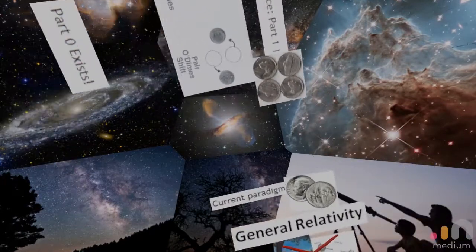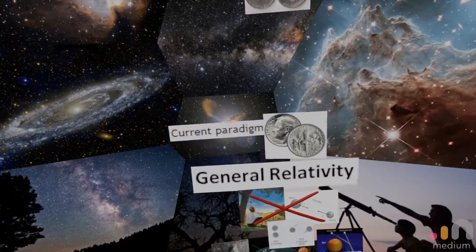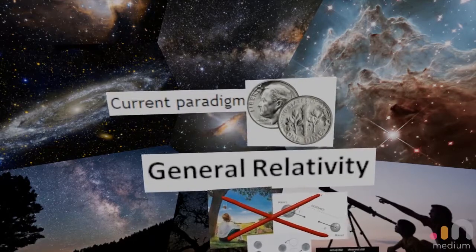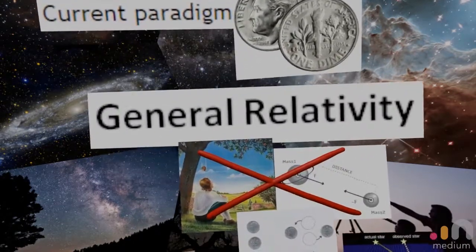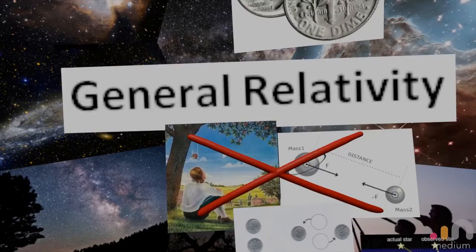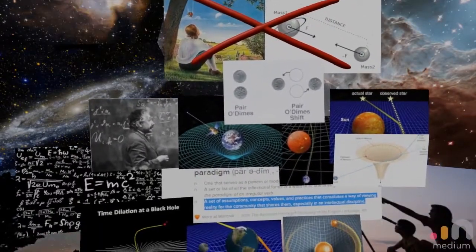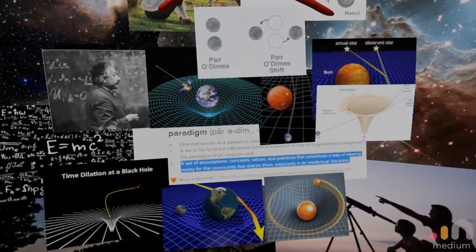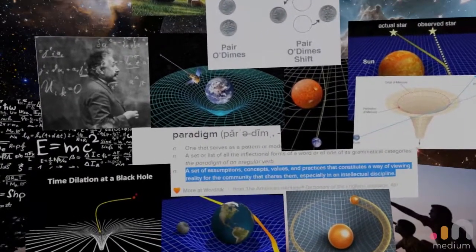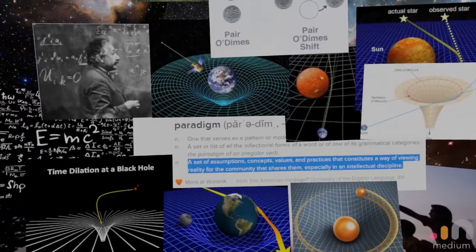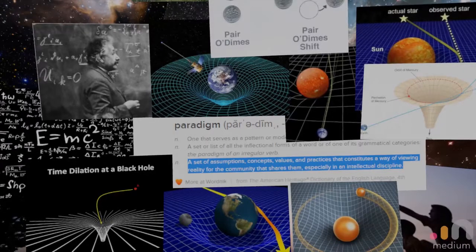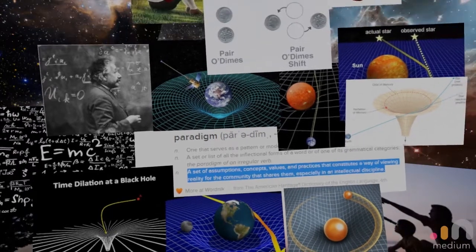Our current paradigm is general relativity. General relativity describes gravity not as a force as the physicist Isaac Newton thought of it, but rather as a curvature of space and time. General relativity is the paradigm that every educated person has been holding for the past hundred years, which is quite a long time.